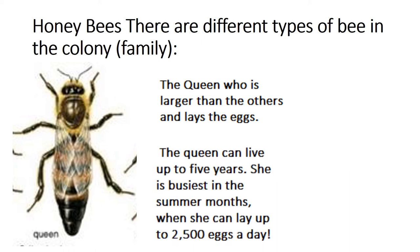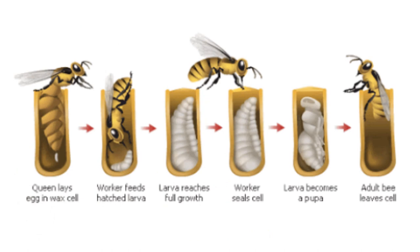The queen can live up to five years. Queen جو ہے وہ پانچ سال تک زندہ رہتی ہے اور تقریباً گرمی کے مہینوں میں 2500 eggs a day دیتی ہے۔ Honeybee hive کے ایک cell میں queen انڈا دیتی ہے۔ پھر جب larva بن جاتا ہے تو worker bees اس کو خوراک دیتی ہیں۔ جب larva full length تک پہنچ جاتا ہے تو cell کو seal کر دیتی ہیں، اور پھر اس larva میں سے pupa نکلتا ہے جو ایک adult honeybee میں بن جاتا ہے جس کے پر ہوتے ہیں اور وہ باہر نکلتا ہے۔